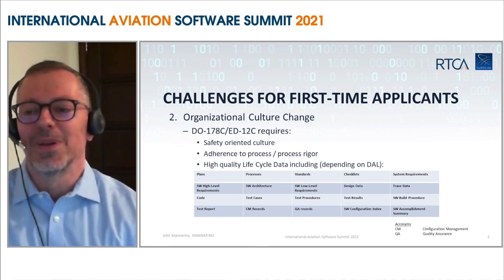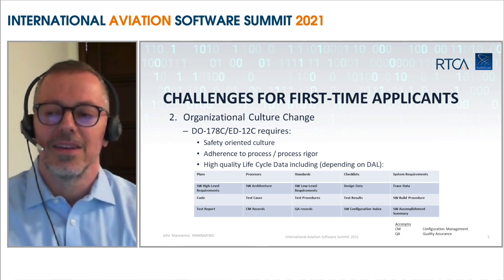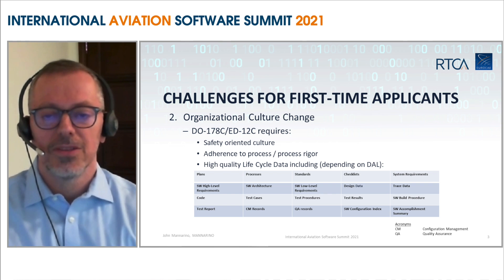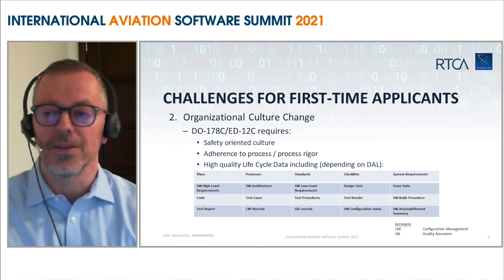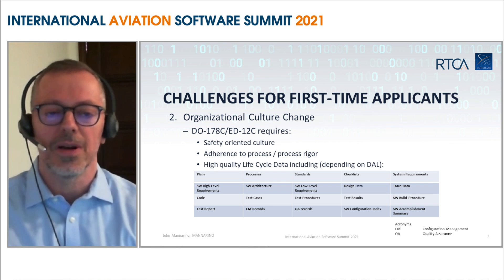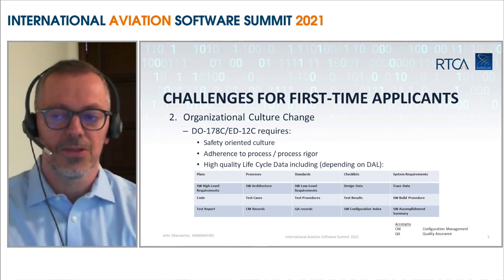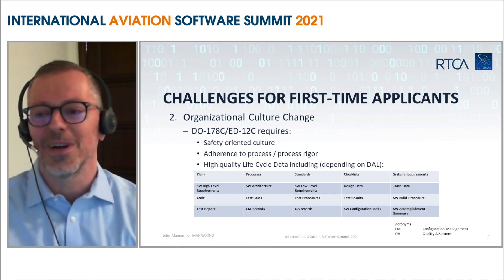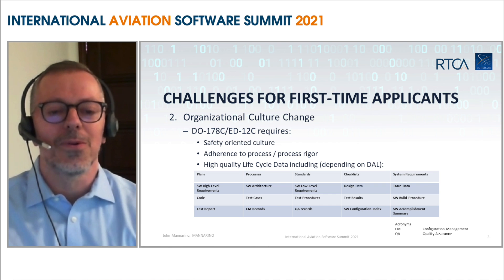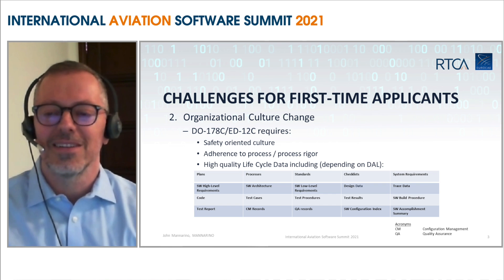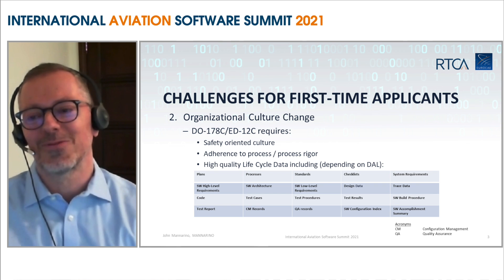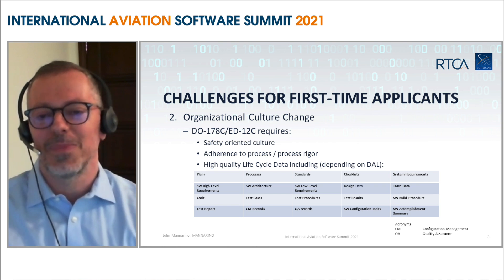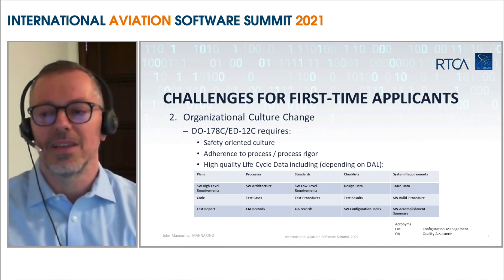Item number two — which in my mind is probably bigger than number one, and it's where a lot of organizations get hung up — is the organizational culture change required to do embedded software to DO-178. It's a mindset that you'll have to embrace within the organization, within engineering, and within all relevant branches: software, system, safety, hardware. You really have to develop a safety-oriented culture if you're going to do this right and convince a certification authority that you're producing safe software.